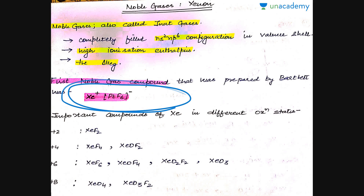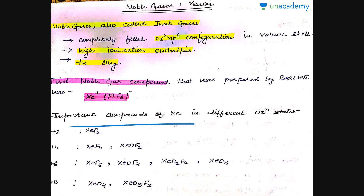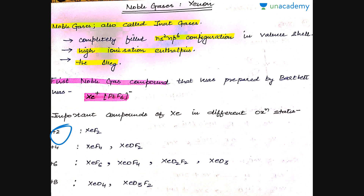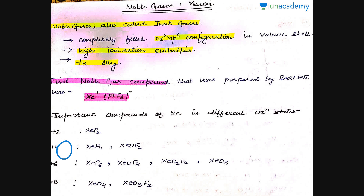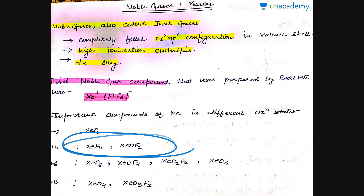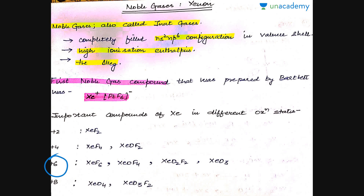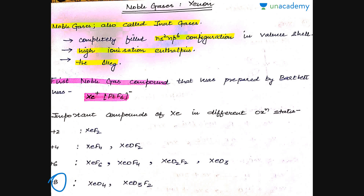Here is a list of important xenon compounds in different oxidation states. In the +2 oxidation state, xenon forms XeF₂. In the +4 state, it forms XeF₄ and XeOF₂. In the +6 state, it forms XeF₆, XeOF₄, XeO₂F₂, and XeO₃. In the +8 oxidation state, it forms XeO₄ and XeO₃F₂.